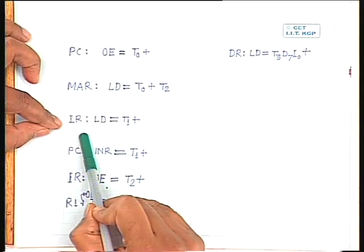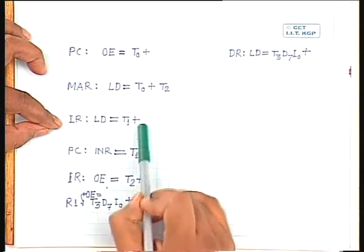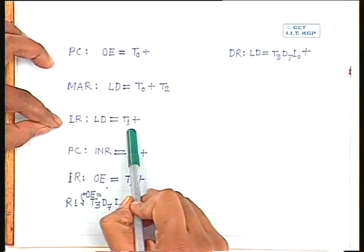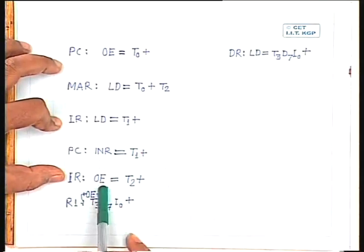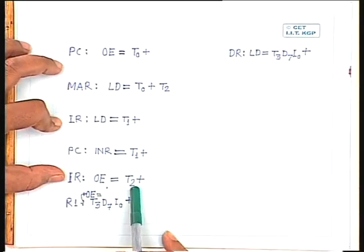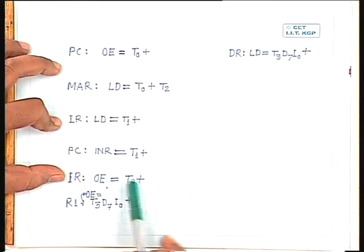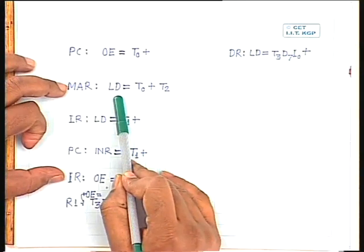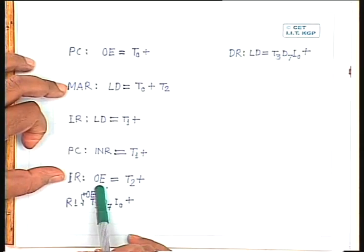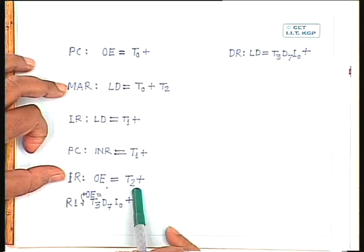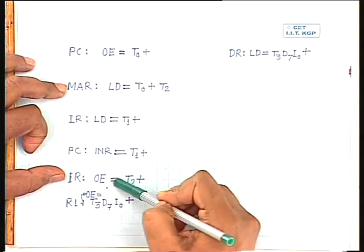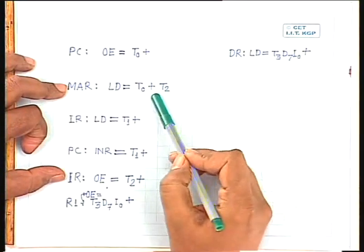The instruction register is loaded during T1, so its load input must be active during T1. The instruction register's output enable must also be active during T2 because during that time, the operand address part of the instruction is loaded into the memory address register. Since both are activated simultaneously, the lower 12 bits from the instruction register are loaded into the memory address register.